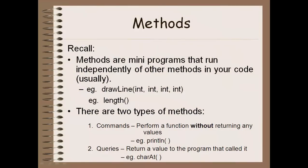So if you recall from our previous lesson on methods, a method is a mini-program that runs independently of the other methods in your code. We've used them throughout our programs to this point in time, things like drawline, length, printline, charat, all those things would be examples of methods.